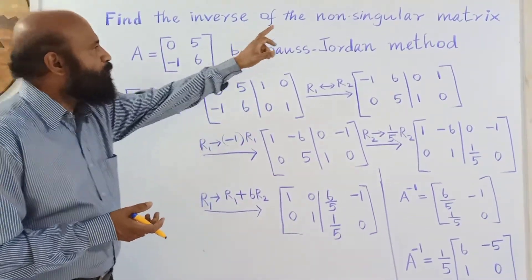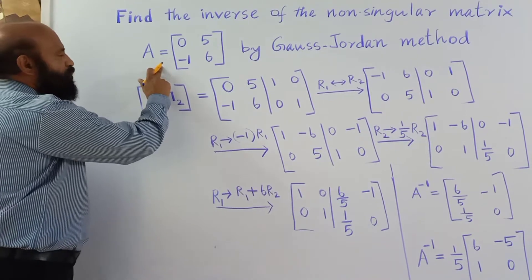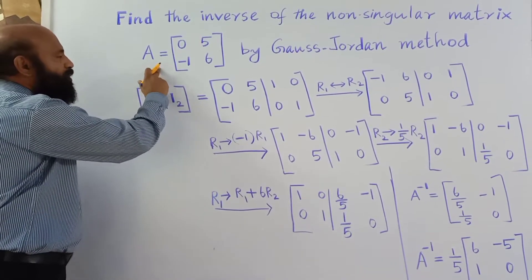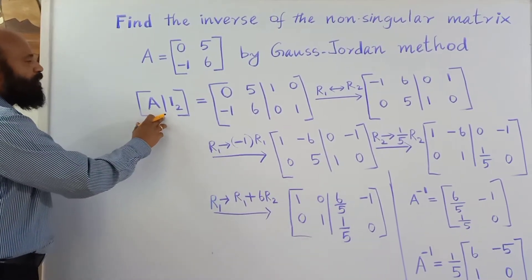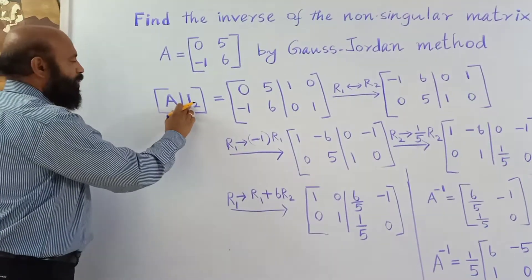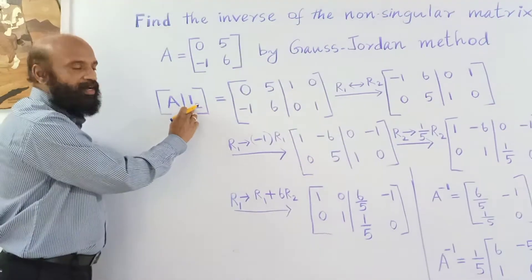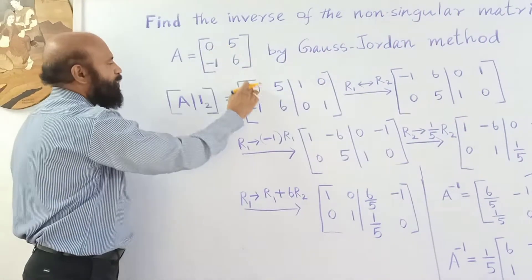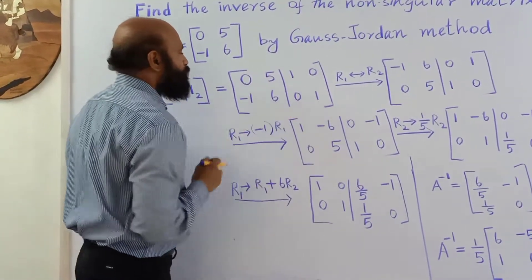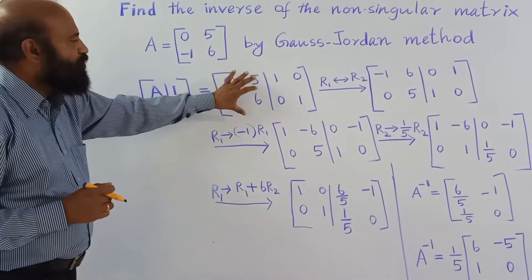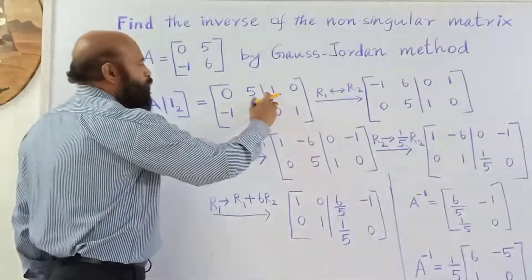For a non-singular matrix, we have to find its inverse using the Gauss-Jordan method. The first step is to augment the given matrix with an identity matrix. Since this is a 2×2 matrix, you augment it with a 2×2 identity matrix — writing the given matrix A as it is, followed by the identity matrix of order 2: [1 0 / 0 1].